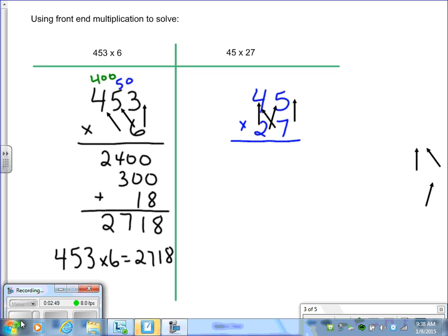So, 20 times 40 is 800. 20 times 5 is 100. Then we move to the 7-digit. 7 times 40 is 28, and we annex a zero. It's 280. And 7 times 5 is 35.